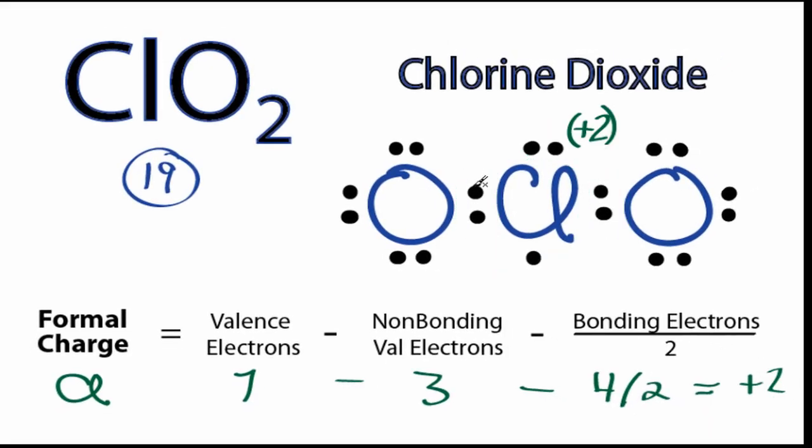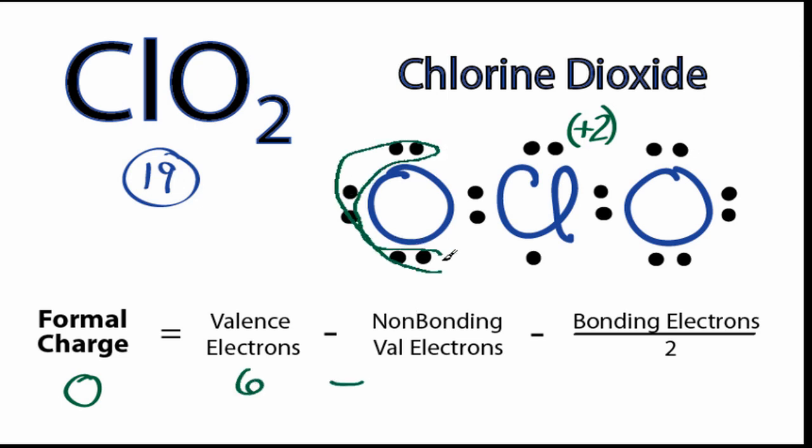Now let's do the oxygen. We only need to do one since they're both symmetrical. For the oxygen, on the periodic table, oxygen is in group 6, or 16, it has 6 valence electrons. Non-bonding, we can see that those are these right here, 6, minus our bonding, these two right here are involved in a bond, so 2, we'll divide it by 2, and that gives us a negative 1. That's the formal charge for this oxygen here.